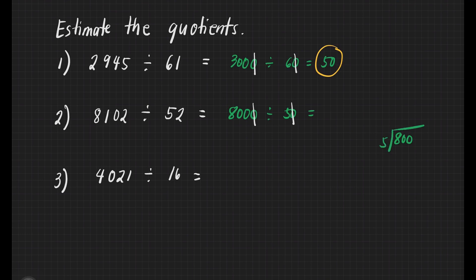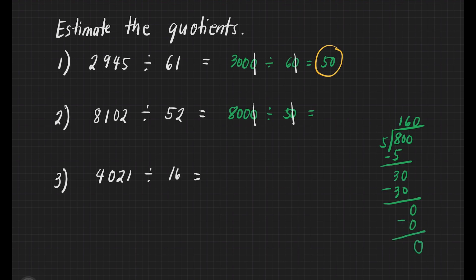How many 5s are there in 8? That's 1. 1 times 5 is equal to 5. Subtract: 8 minus 5 is equal to 3. Bring down 0. How many 5s are there in 30? That's 6. 6 times 5 is equal to 30. Subtract — you get 0. Bring down 0. How many 5s in 0? That's 0. 0 times 5 is 0. Subtract — we get 0. Our answer for number 2 is 160.